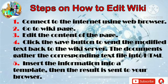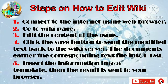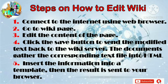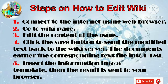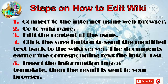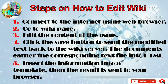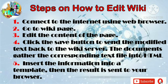Here are the steps on how to edit a wiki. Number 1: connect to the internet using a web browser. Number 2: go to the wiki page. Number 3: edit the content of the page. Number 4: click the save button to send the modified text back to the wiki server. The documents gather the corresponding text files into HTML. Last, insert the information into a template; then the result is sent to your browser.